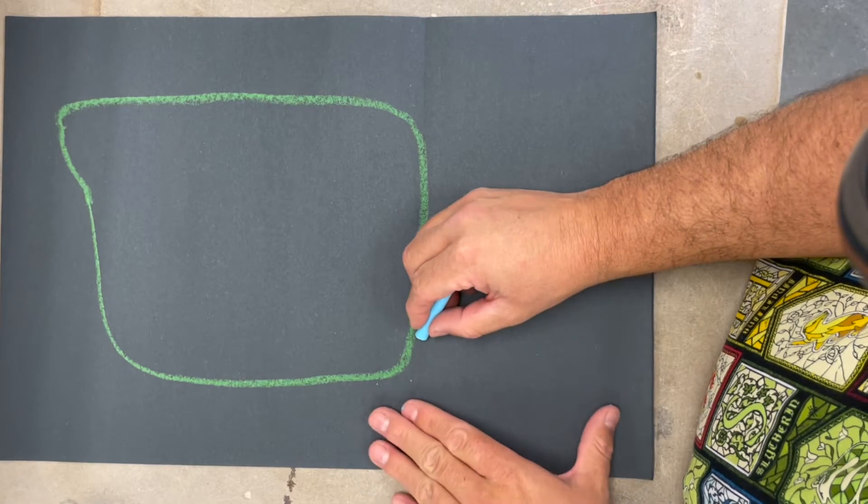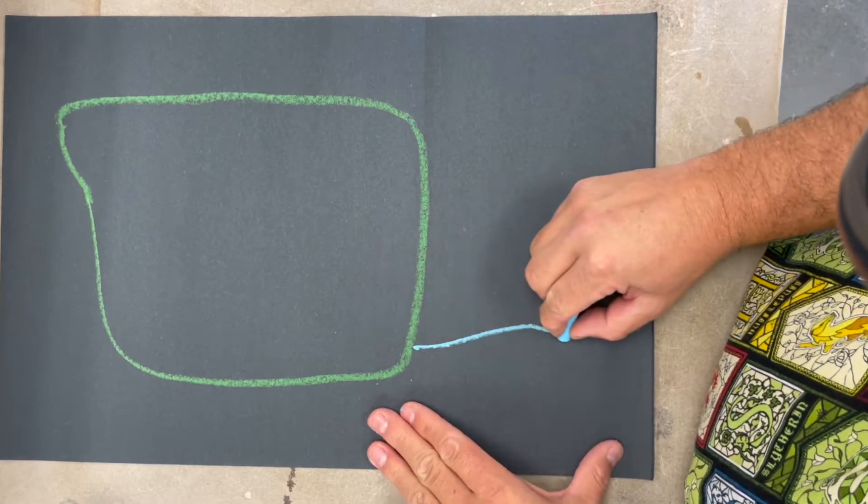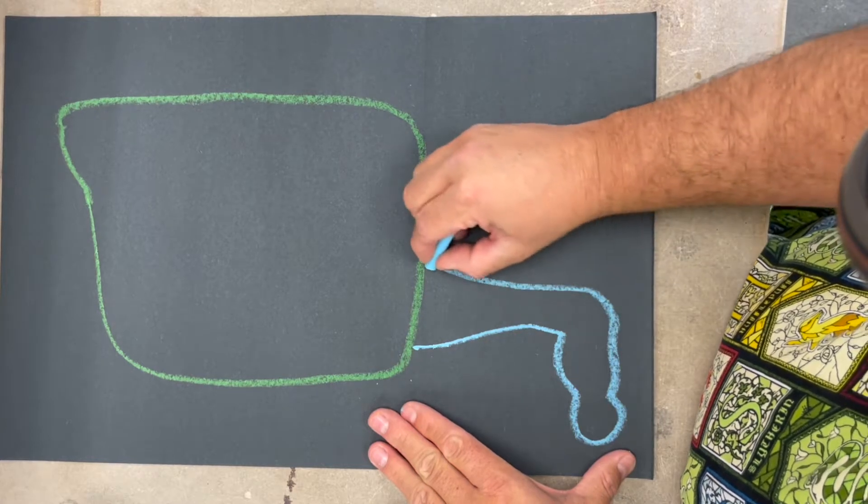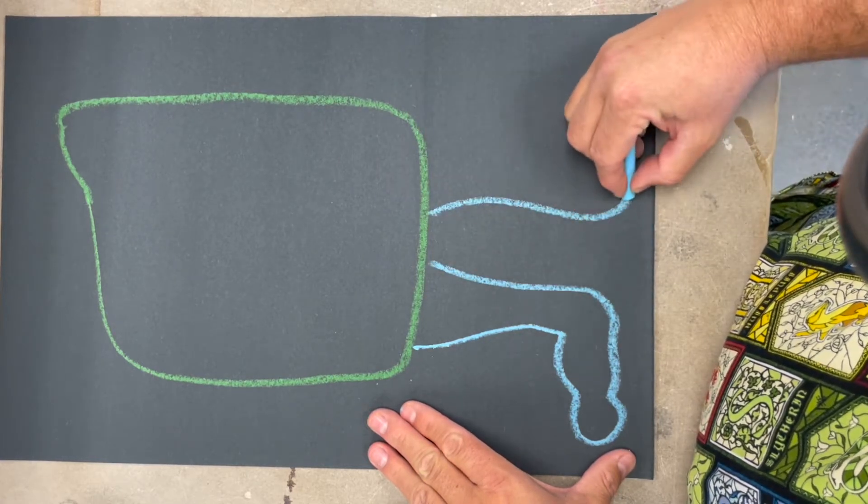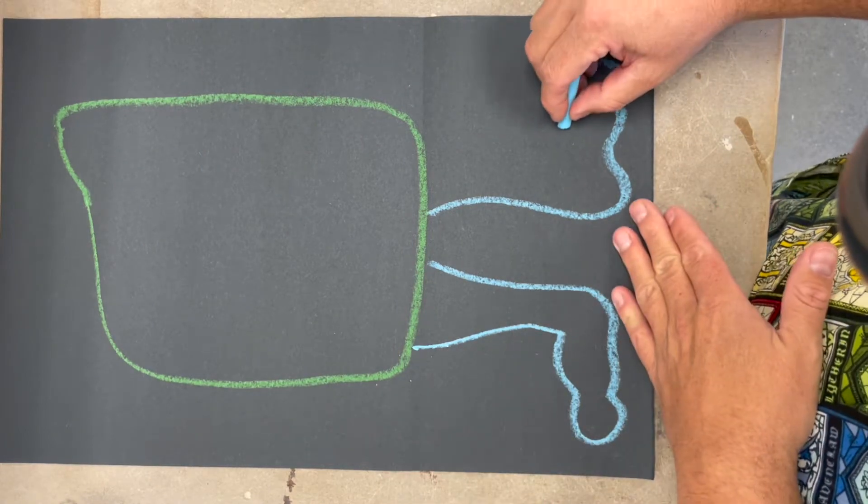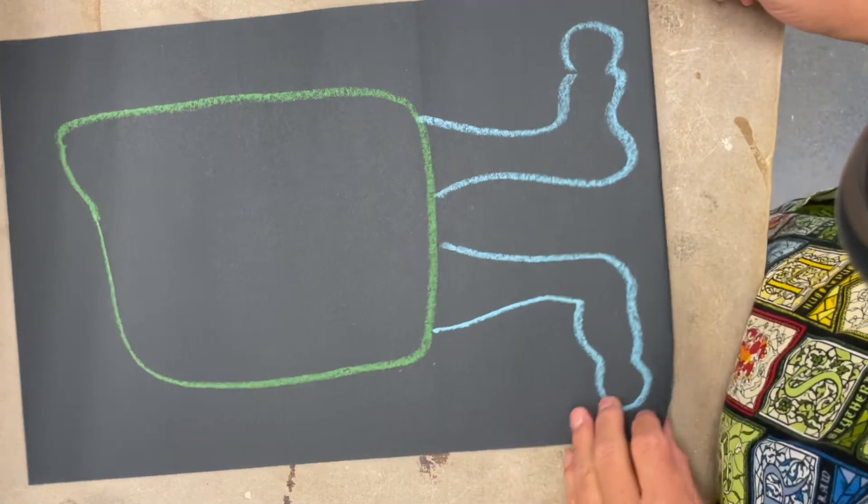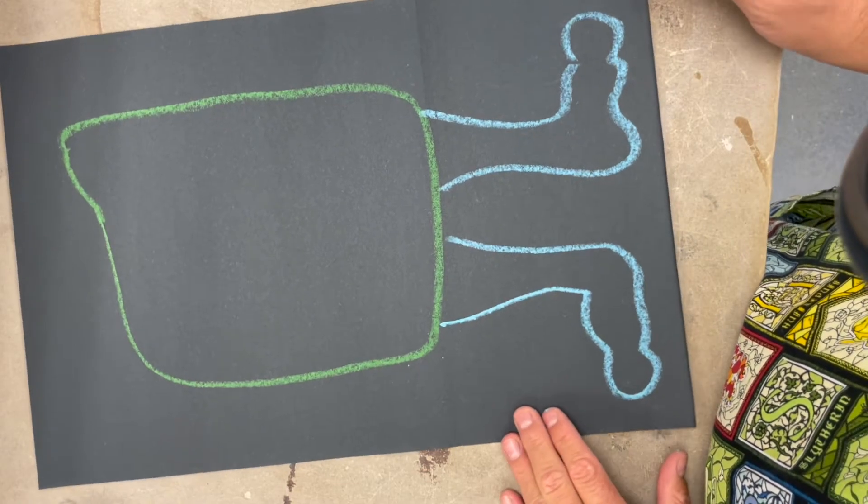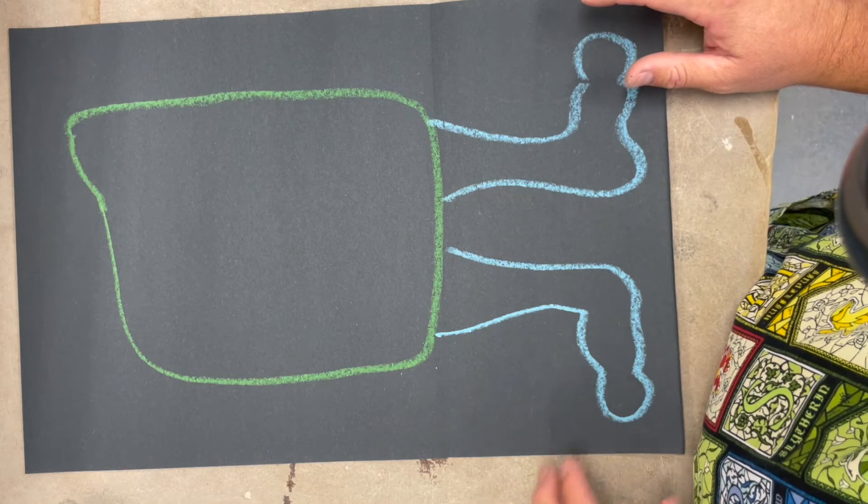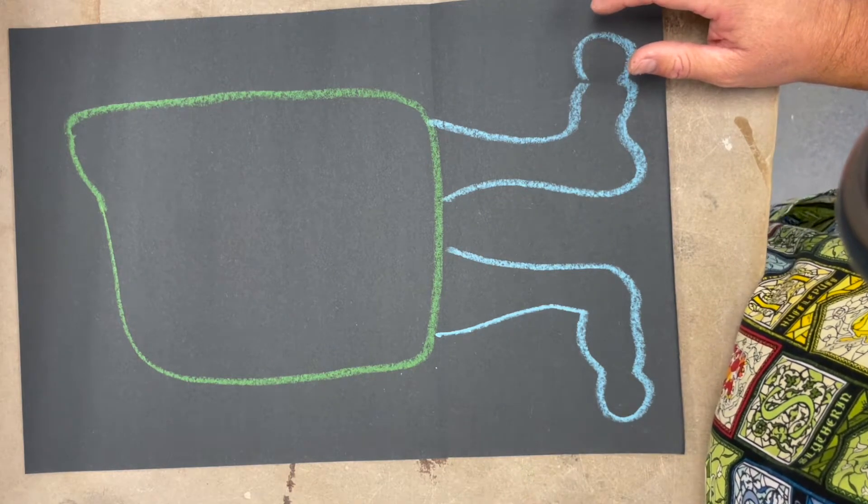So I'm going to take this and I'm going to draw some legs. The big part is you want to make sure that you're drawing big shapes so that when we go in and make it, the pieces are together.